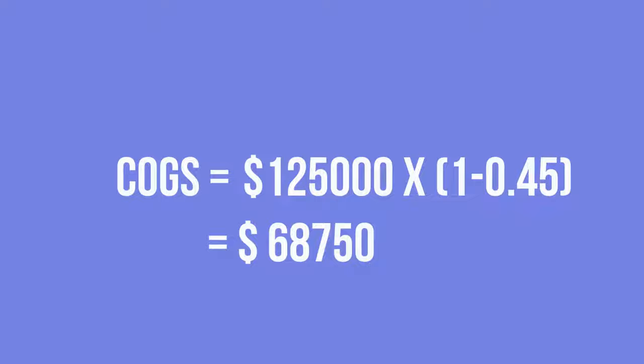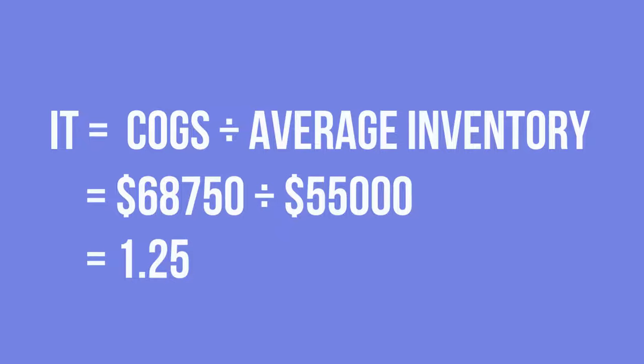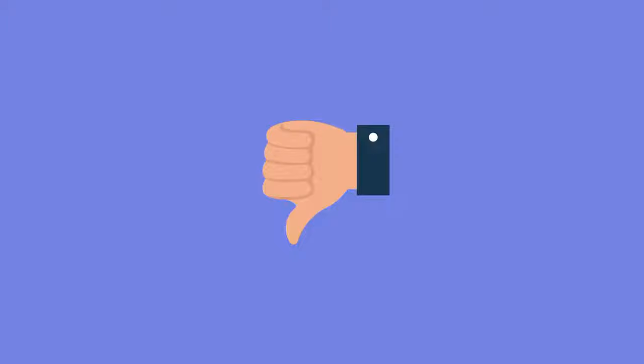Applying the formula for inventory turnover, we find that the result equals 1.25. So the company has sold and replaced its inventory 1.25 times in a year. For most retail categories, this is considered a very low inventory turnover.